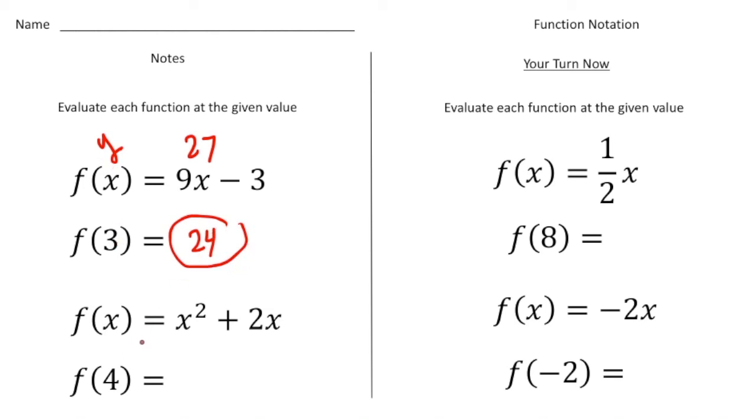Now this one, it's f of x equals x squared plus 2x. So what I'm going to do is I'm going to plug in the 4 for the x here and also for over here. So I know 4 squared is 16 plus 2 times 4 is 8. And 16 plus 8 gives us 24.